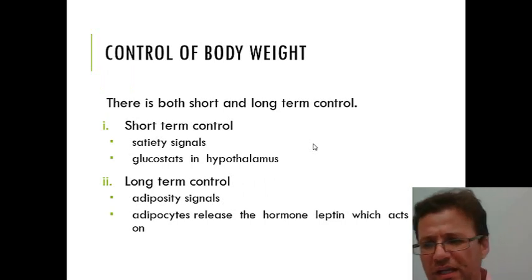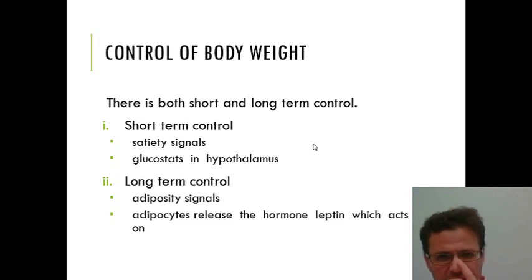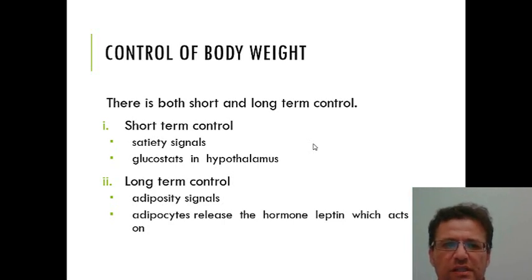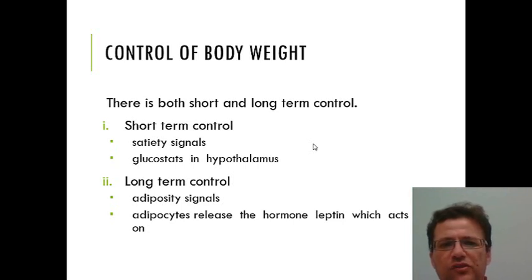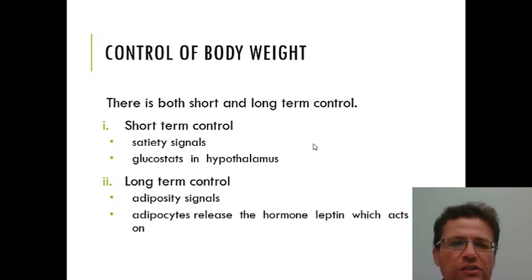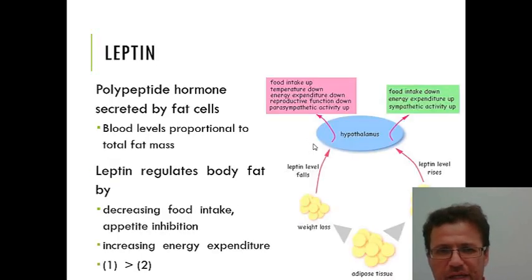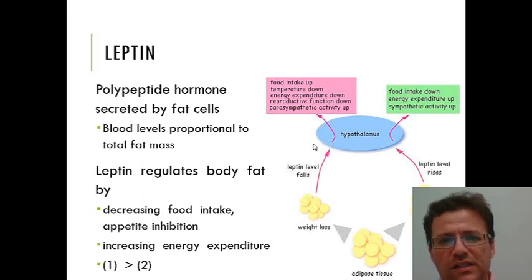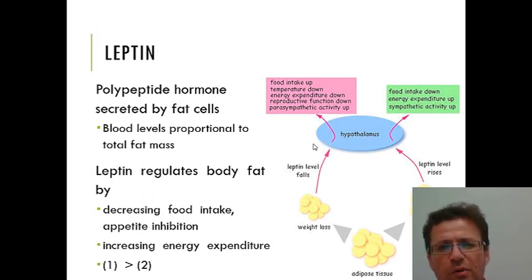There are areas of the hypothalamus that control eating, but we also know there are short-term signals and long-term signals that control eating. Short-term signals relate to how full you currently feel, while long-term signals relate to the amount of adipose tissue you have — the amount of fat cells. We want to look at one example of each: leptin as an example of long-term control, and ghrelin as an example of short-term control. The hormone leptin was only discovered about 20 years ago in 1994, and before that we had no idea that fat cells produce it.